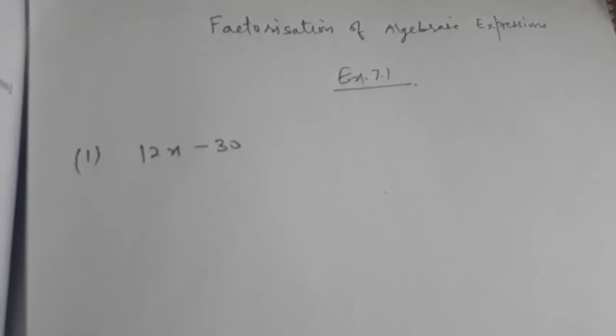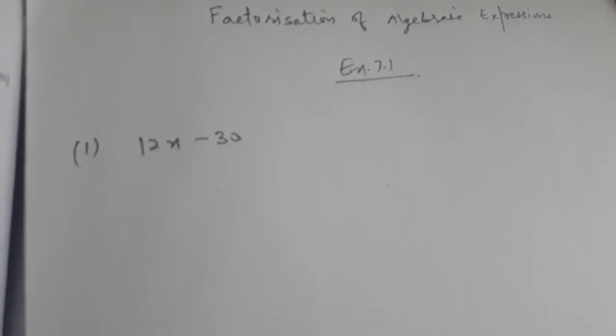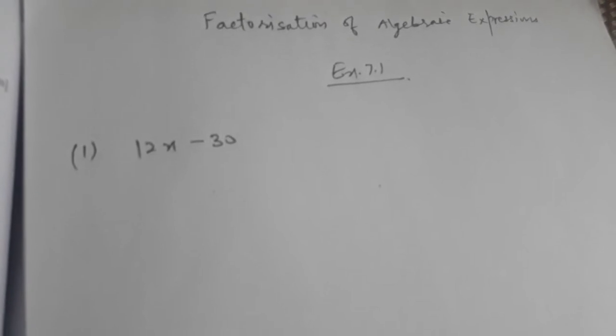If you want to see the solutions of rational numbers, exponents, square and square roots, and algebraic expressions, you can go to the description box where all the links have been given. If you have any doubts regarding the questions you can comment in the comment box. I will definitely try to solve the doubts. So let's start with Factorization of Algebraic Expressions, Chapter 7, publication house Goel Brothers Prakashan, Class 8.